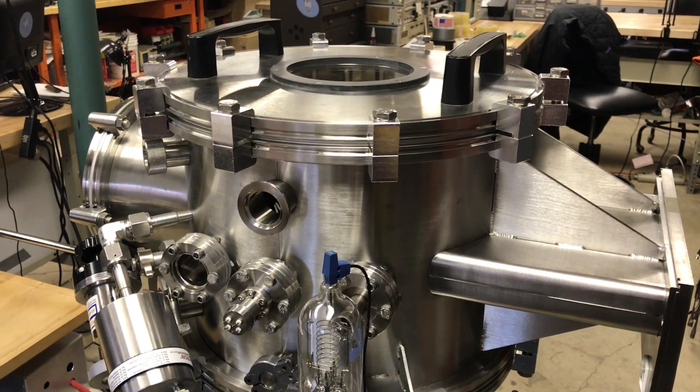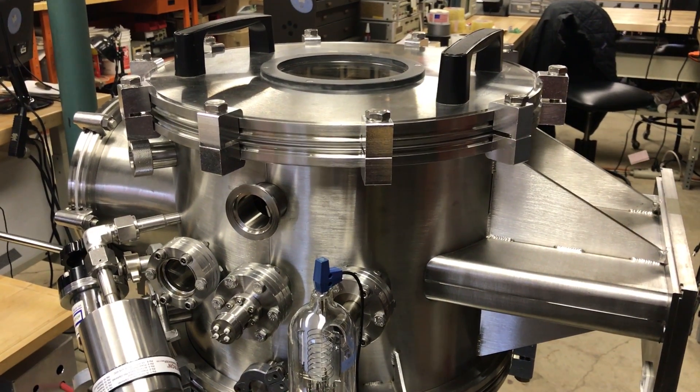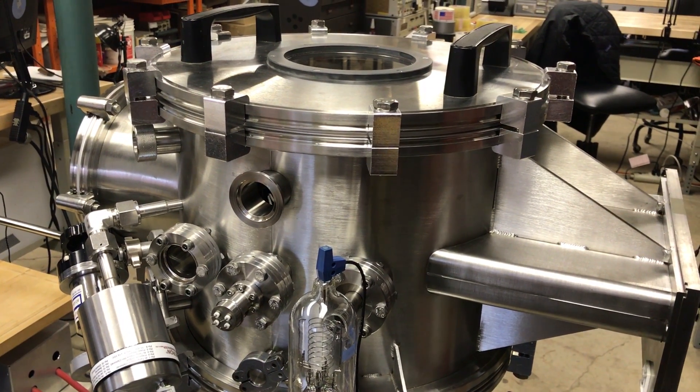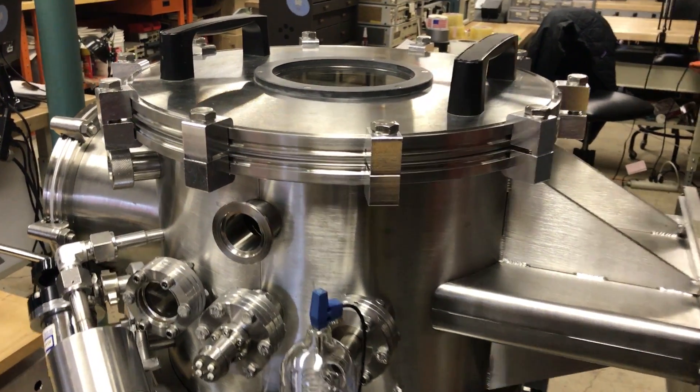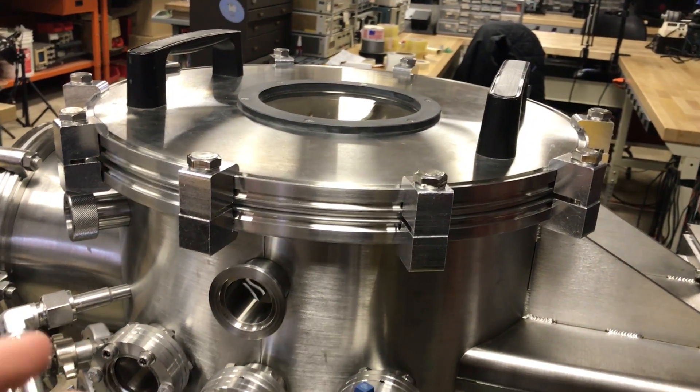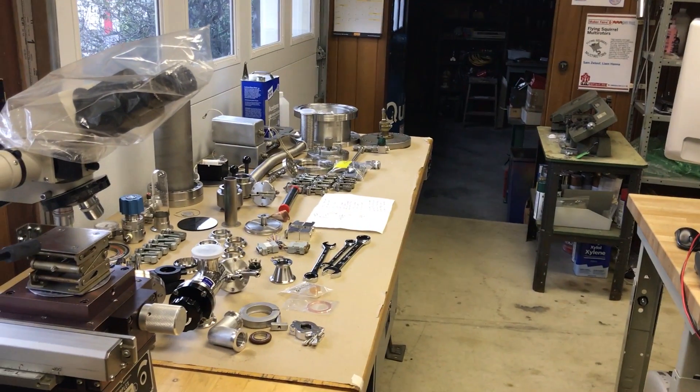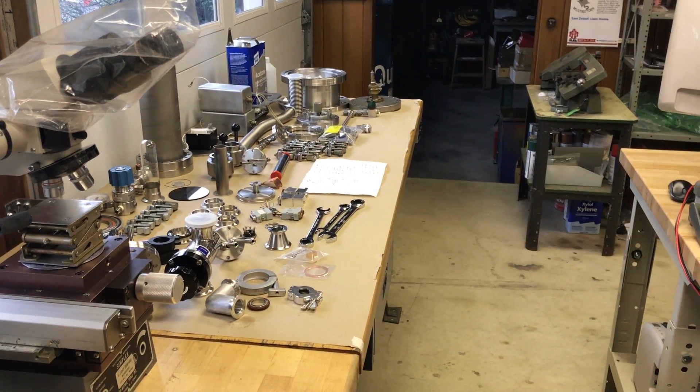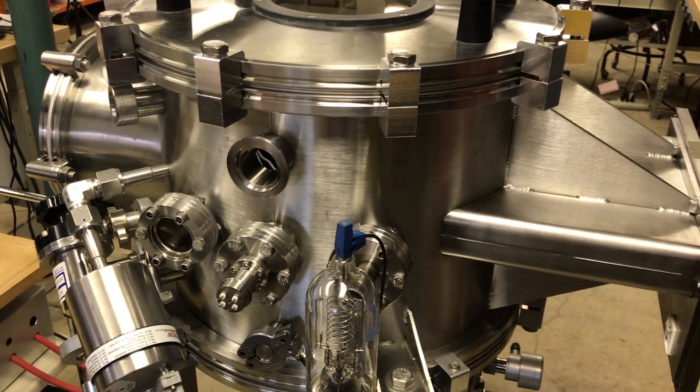First thing, when you're working on this kind of stuff, you should always wear gloves. Even nitrile gloves are good, but you want to prevent putting your fingerprints on any surface that's going to be exposed to vacuum, especially on the inside of the chamber. So even when you're just handling flanges and such, you should always be wearing nitrile gloves, and that just prevents a lot of unnecessary cleaning afterwards.